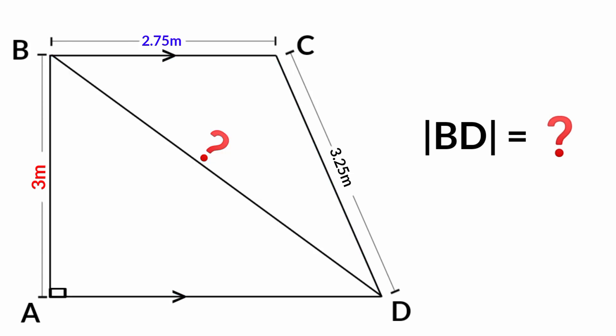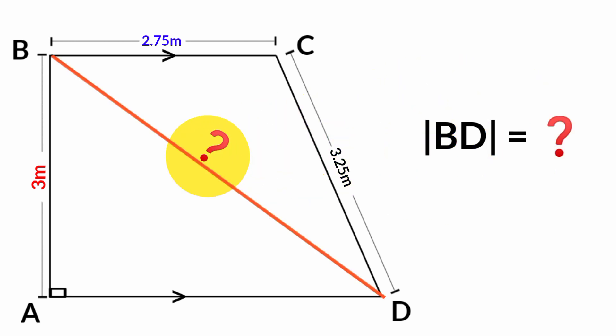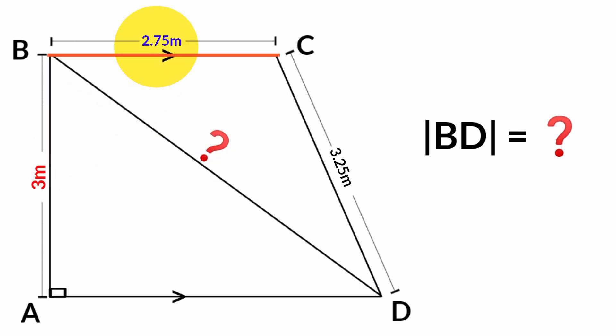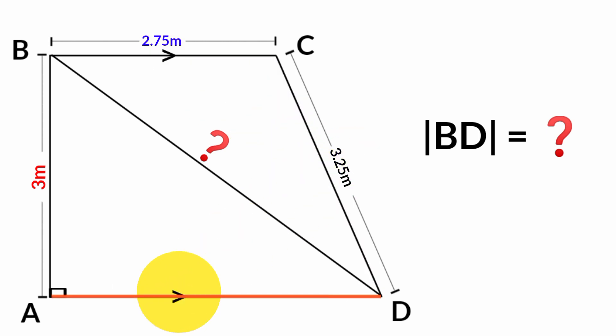Hello, dear friends. Today we have a very nice question in which we are to calculate the length of line BD. We can see the length of this side is 3 meters, this is 2.75 meters, and this is 3.25 meters. This side is parallel to this side, and this angle here is a right angle. So how can we solve it?